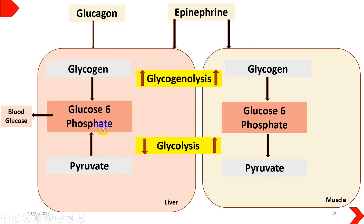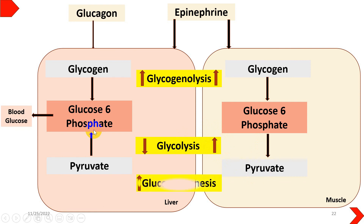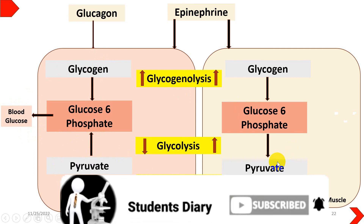In liver cells, because gluconeogenesis only takes place in the liver, there will be no glycolysis in response to glucagon — instead glycolysis is decreased — while in muscle cells, glucose-6-phosphate is further directed to the glycolysis process due to low ATP, resulting in enhanced glycolysis in muscles compared to liver. Regarding gluconeogenesis, it takes place only in the liver, with glucose produced from both pyruvate and glycogen within liver cells, while in muscle cells there is no gluconeogenesis.